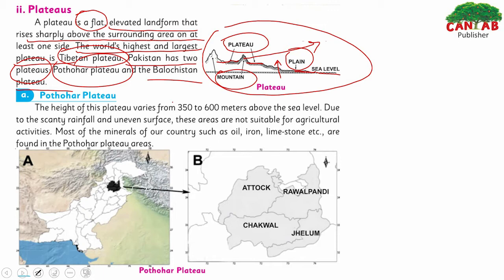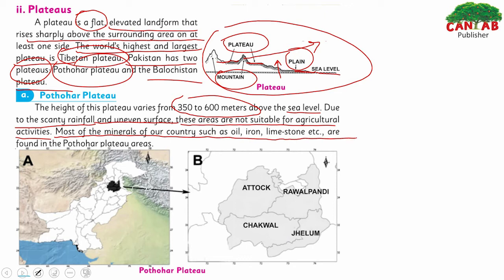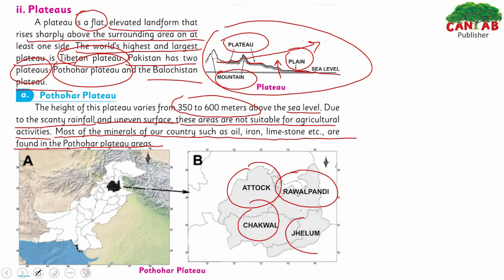The Potohar Plateau's height varies from 350 to 600 meters above sea level. Due to scanty rainfall and uneven surface, these areas are not suitable for agricultural activities. However, most of the minerals of Pakistan — such as oil, iron, and limestone — are found in the Potohar Plateau areas, which cover Attock, Rawalpindi, Chakwal, and Jhelum.